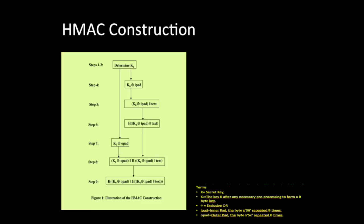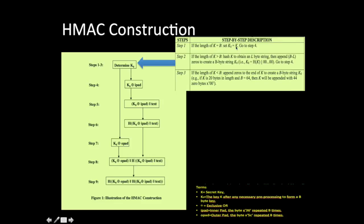Now let's see how the HMAC construction happens for a given key and byte array. The entire algorithm runs from step one to step nine, with step nine as the final outcome. From steps one to three, we find K0 — the key after preprocessing to form a b-byte key. Based on the key length: if the key is greater than, equal to, or less than b, we perform the corresponding step. If the key is less than b, we append zeros; if equal to b, K0 becomes the key itself.